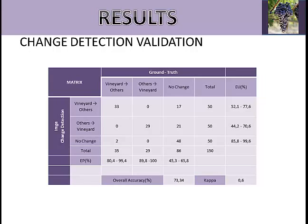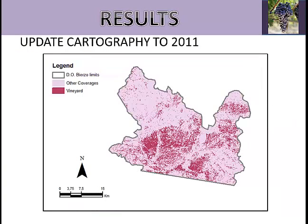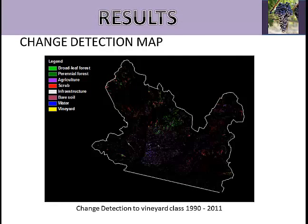Finally, the producers' accuracy confidence threshold of the change from all other classes to vineyard class was from 89.8% to 100%. In this table, the changes between classes are shown, so we can see the gains and losses of the classes' surfaces. As a remarkable result, a gain of vineyard surface was detected of above 4,600 hectares. In this slide, the resulting updated cartography from 2011 is shown, and the change detection image for vineyard is displayed.